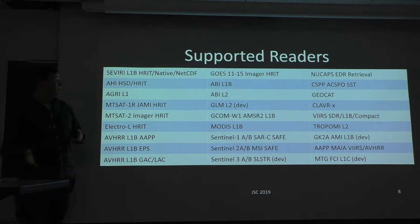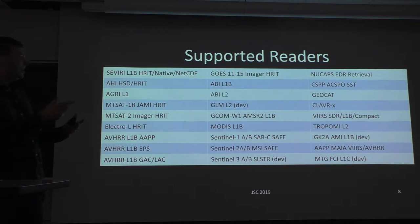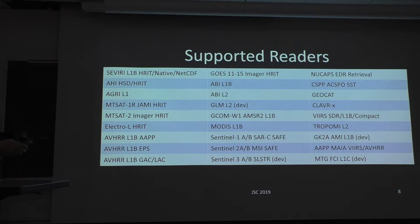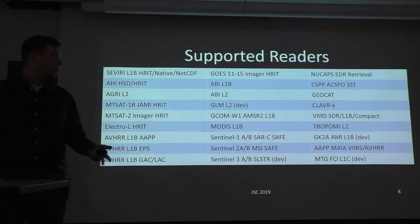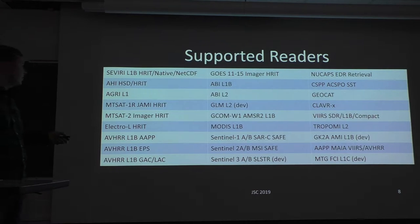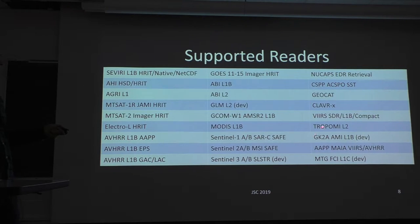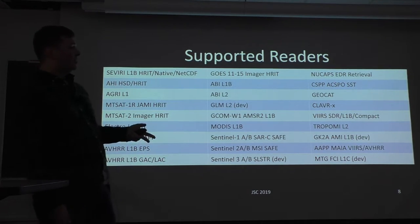Here's a table of some of the readers in SatPy — there are more coming all the time. Some of the newer ones: AMI, which is the Korean satellite; AHI HST and HSD formats; SEVIRI formats; GeoCat and ClaverX products; gridded GLM data; MODIS; VIIRS; AVHRR; TROPOMI Level 2. We can use those readers instead of the ABI Level 1B reader I used before.